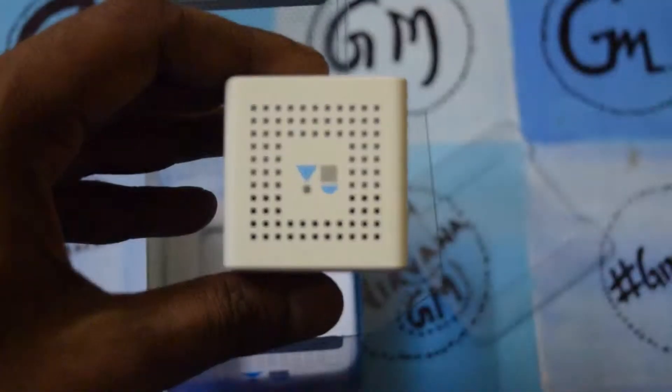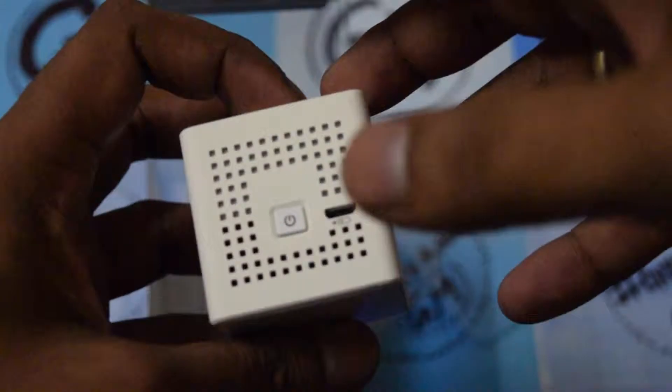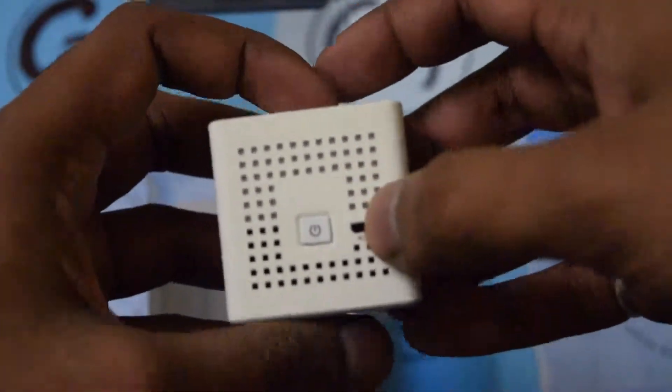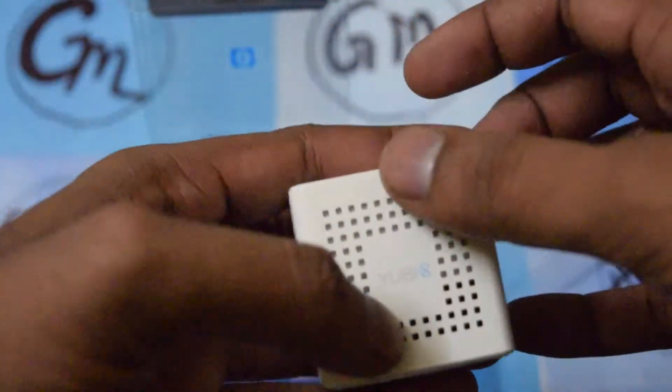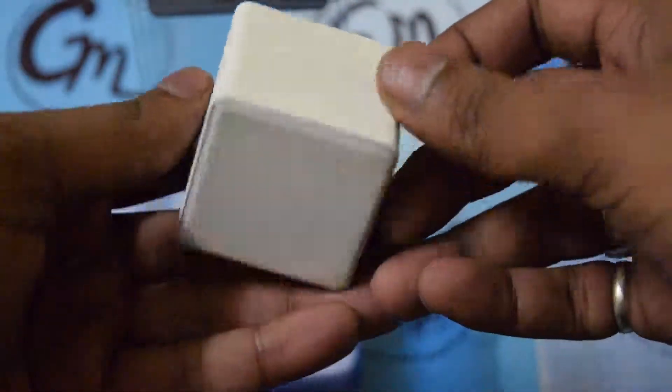As you can see, it's very small. Here it is written UPlayGod. It has the power key, this is the micro USB charging slot, and this is the output of the battery.